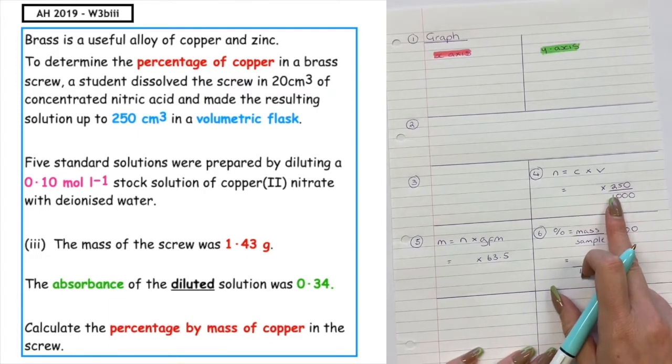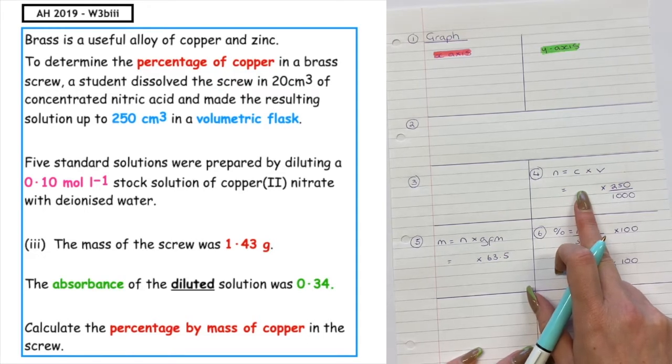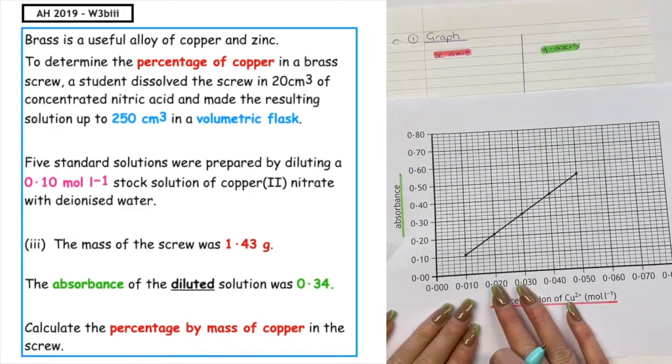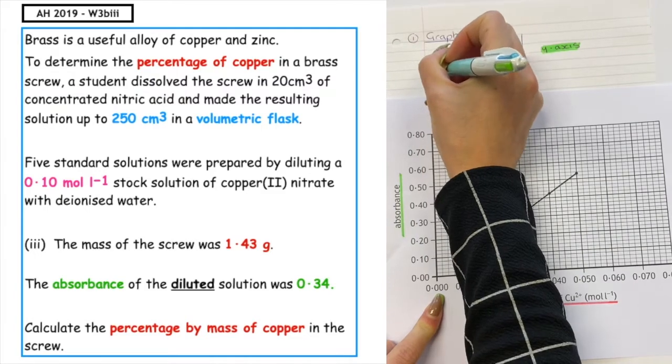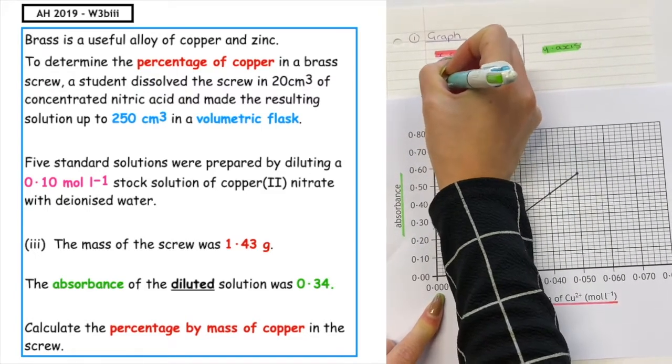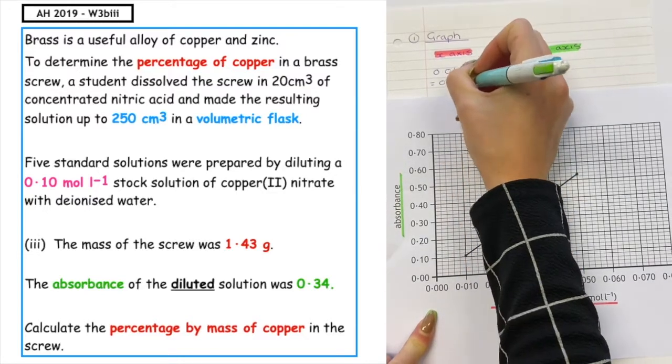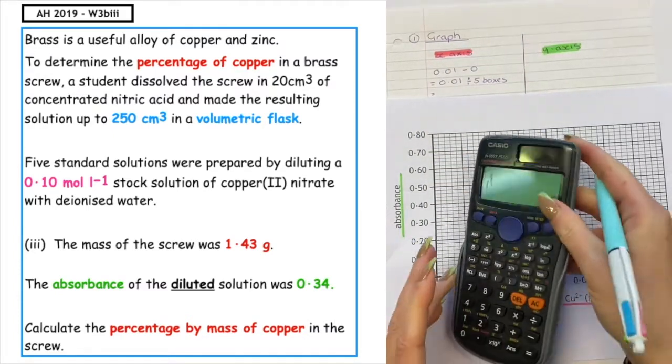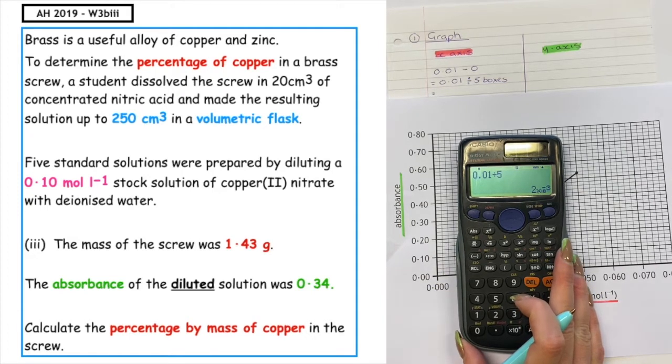What we're wanting to do now is we want to use the graph to find the concentration. To do that, we have to first be able to work out what each box represents on the x and the y axis. We want to take the first two numbers that were given on the x-axis and take them away from one another. So we would do 0.01 take away 0 would give me 0.01. How many boxes is there along? 1, 2, 3, 4, 5. So we'll divide by 5 boxes. When I pop that into my calculator, 0.01 divided by 5, that means that each individual box represents 0.002.